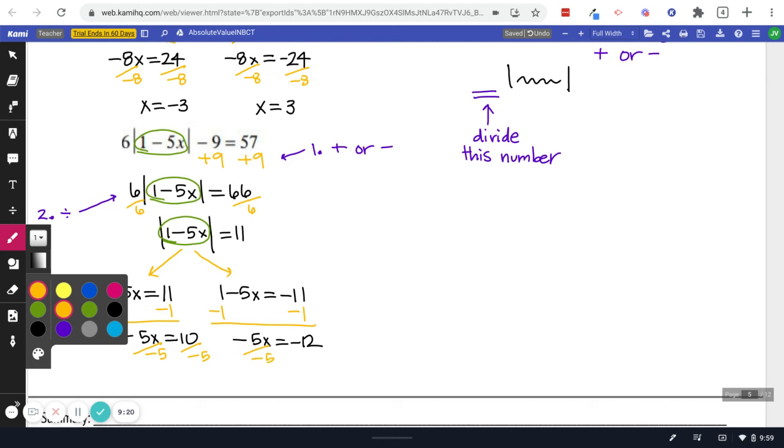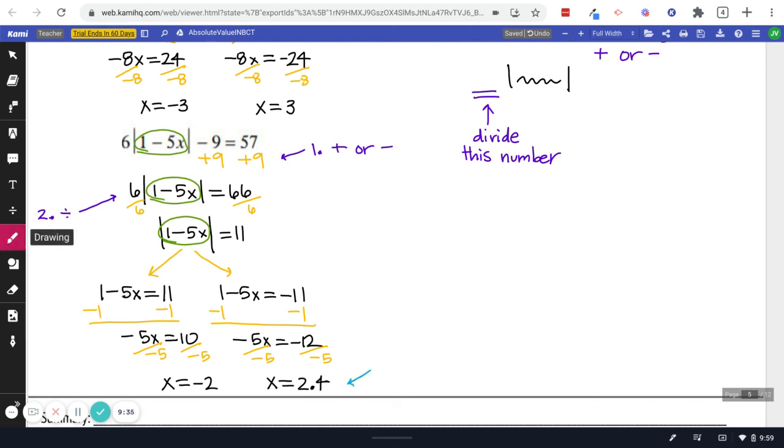First question, x can be negative 2. Second equation, x can be positive 2.4. And remember, decimals are okay.